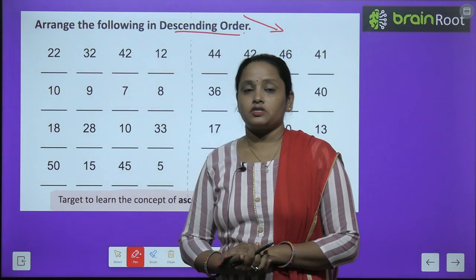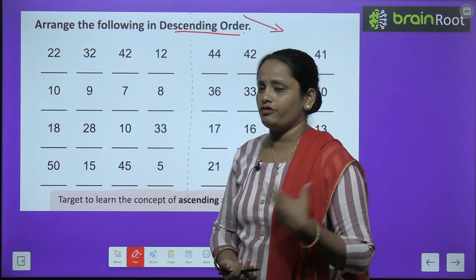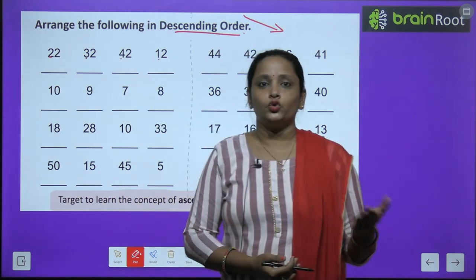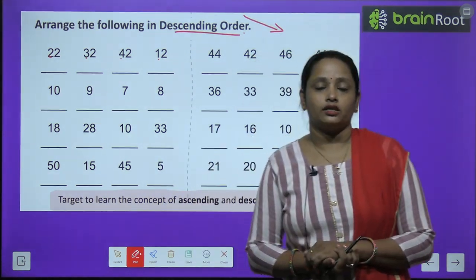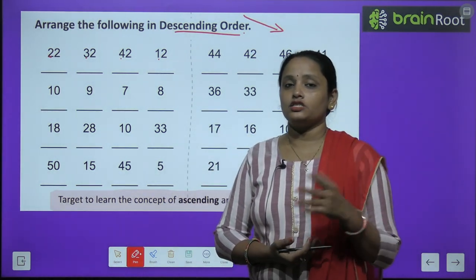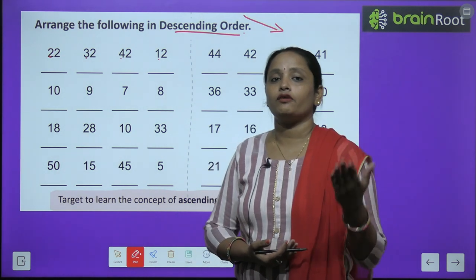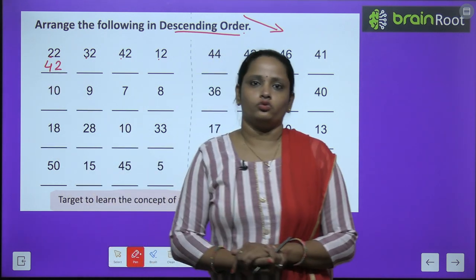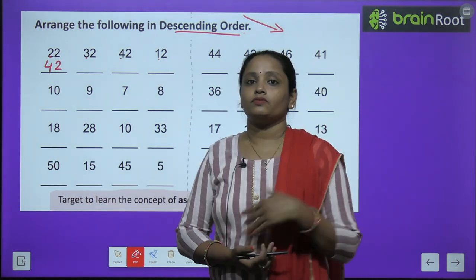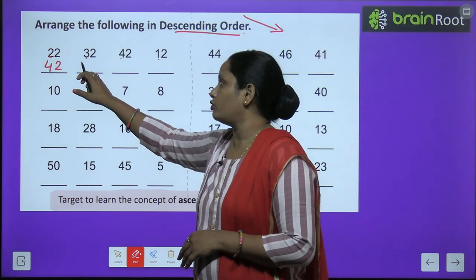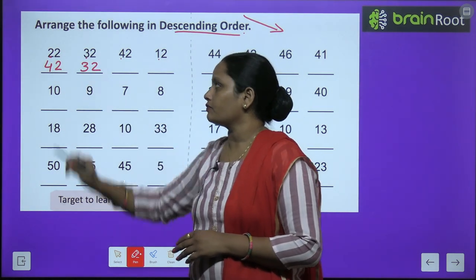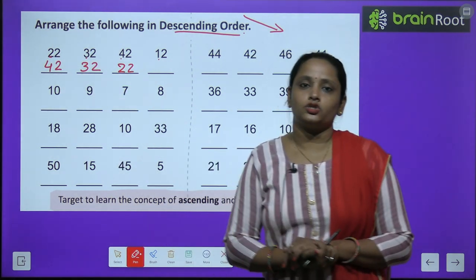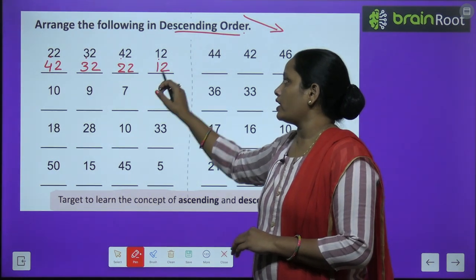Toh chalo dekhte hain, sabse bada number kya hai? Hum kya karenge? Phir se wahi karna hai. Sabka pahla number dekhte hain. Toh sabka pahla number hai: two, three, four, aur one. Toh jaldi bataiye, sabse bada kaunsa hai? Four bada hai, toh humne likh diya forty-two. Ab hai forty-two ke baad thirty-two. Kyunki four ke baad aata hai three. Ab three ke baad aata hai two: twenty-two. And then hai twelve.